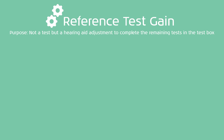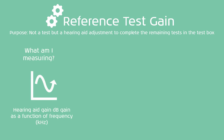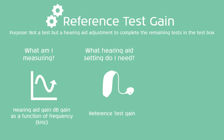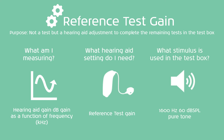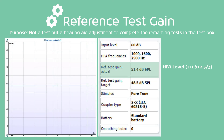The next step — an essential one before taking any other measurements — is the reference test gain. Note that this is not actually a test but a hearing aid adjustment needed to complete the remaining tests. You'll be measuring hearing aid gain in dB gain as a function of frequency in kilohertz, with the hearing aid set to reference test gain. The stimulus is a 1600 Hz, 60 dB SPL pure tone. The reference test gain actual reading shows the HFA level, which can be noted for reference but isn't set against any of the standards.